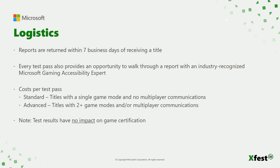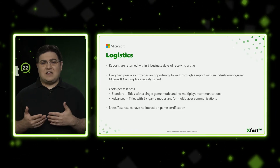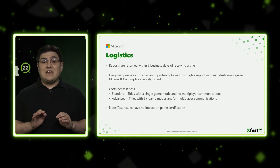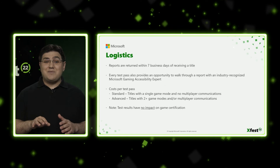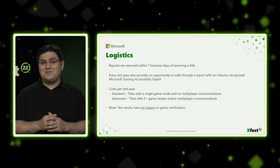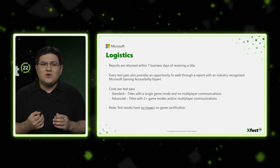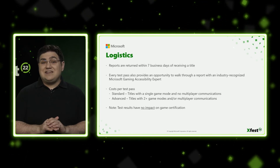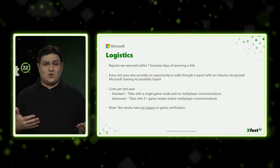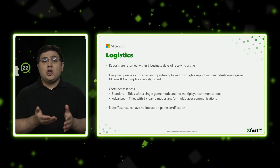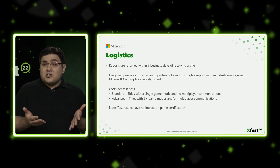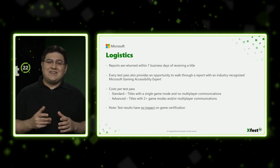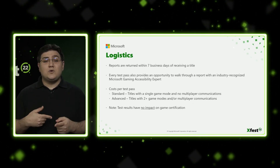Stepping back a bit — we've talked a lot about reports and all the information included in them. Let's talk about some of the logistics. Generally speaking, we can turn a report around within seven business days of receiving a title. We want your teams to get this information back as quickly as possible so you can dive into the material and begin planning how you're going to tackle the feedback. Once you've received the report, we encourage you to take advantage of one of the perks of this program: going through your report with one of the Microsoft Gaming Accessibility Team's subject matter experts. It's a great opportunity to ask questions about feedback, brainstorm on solutions, and learn about additional tools and resources.